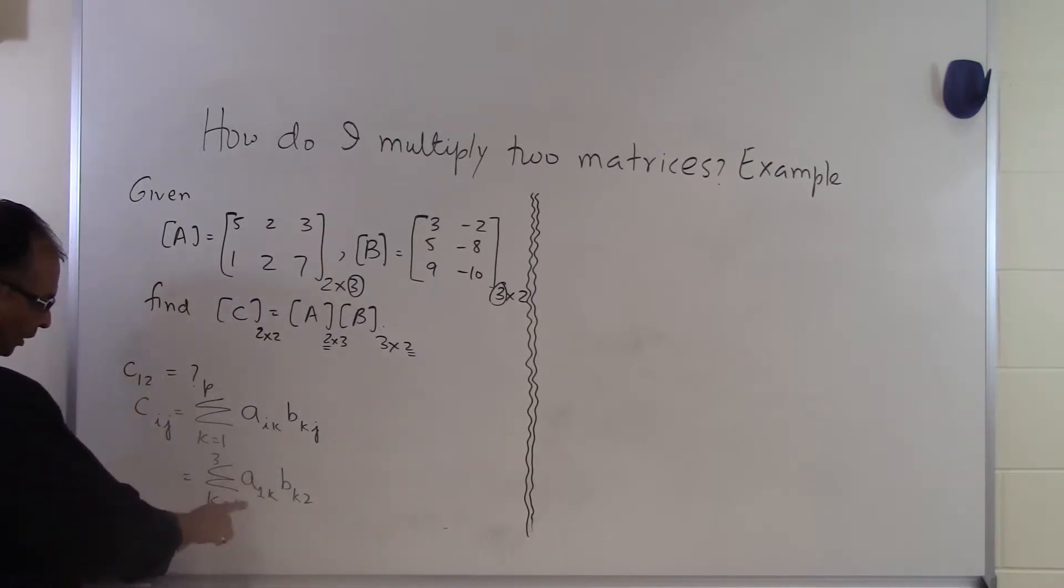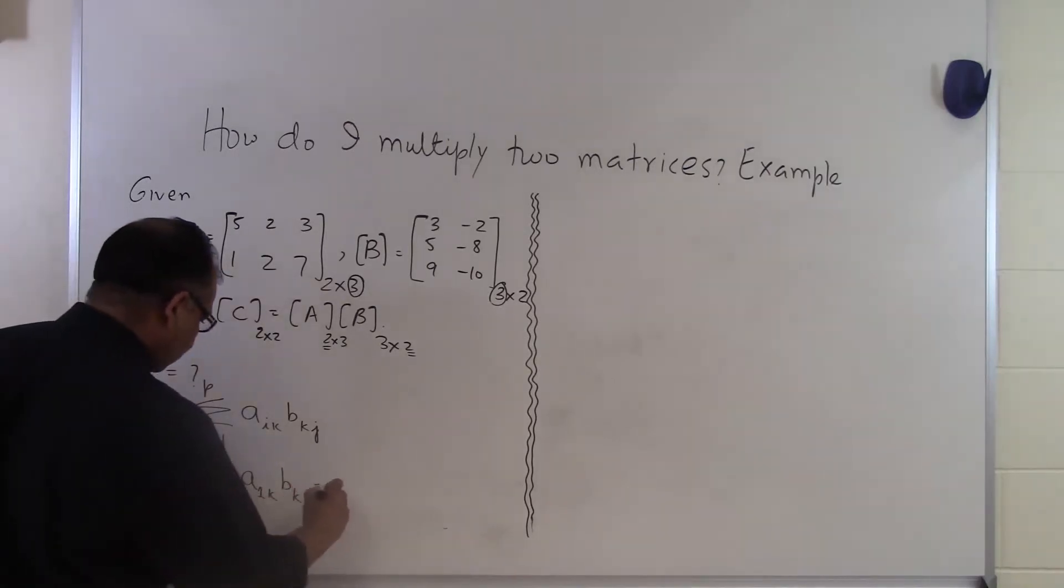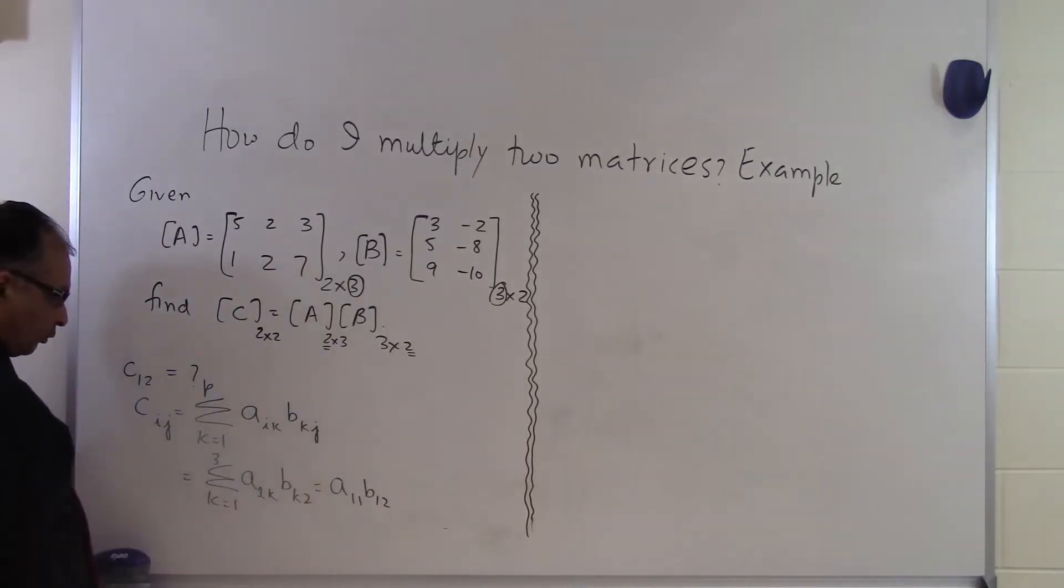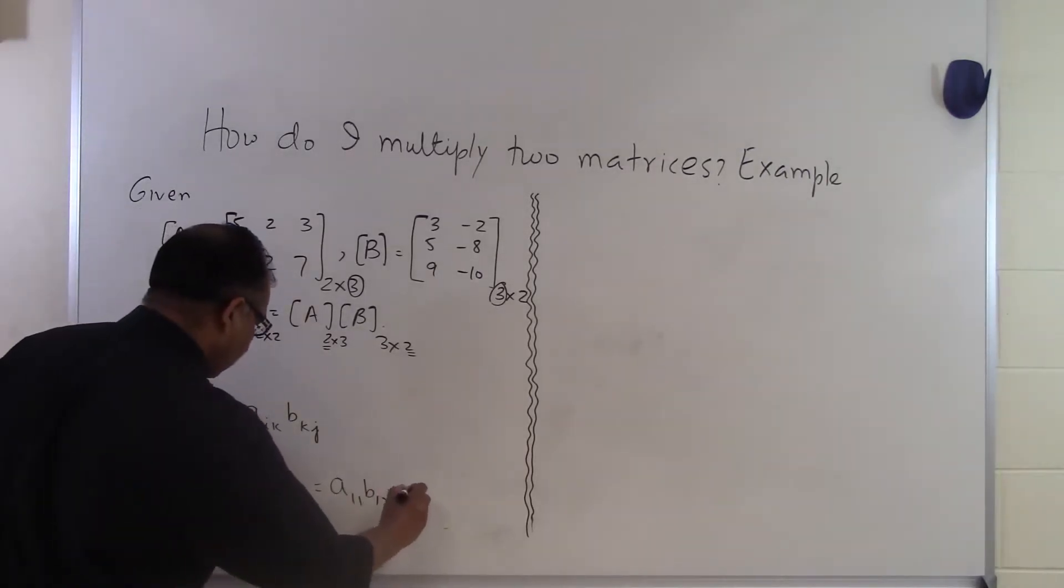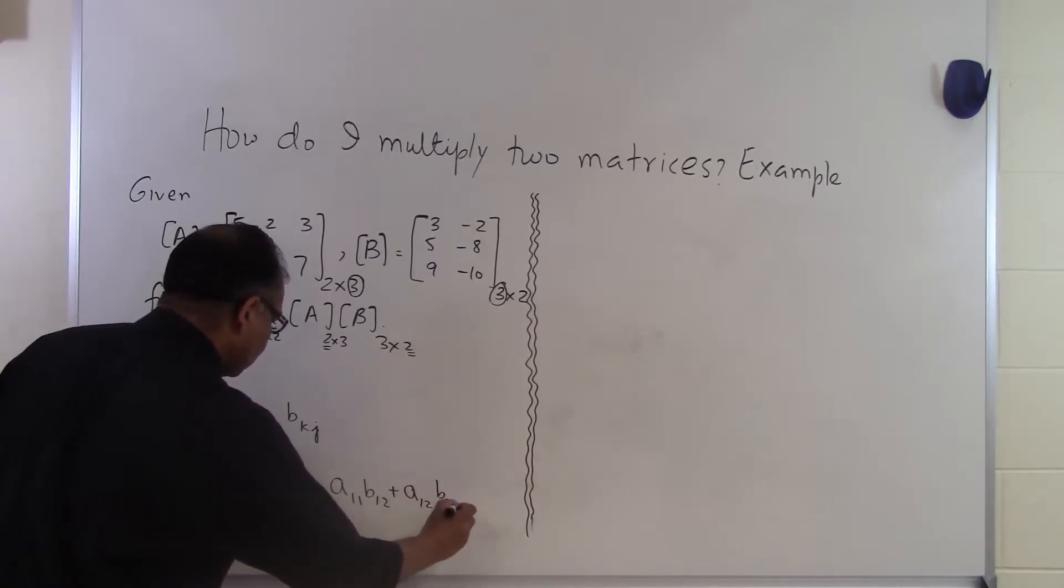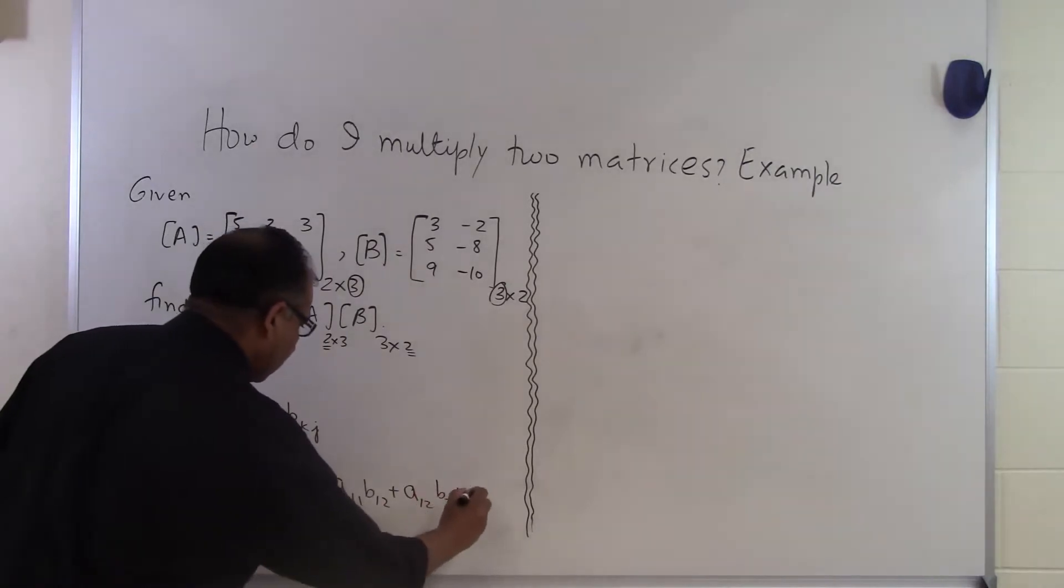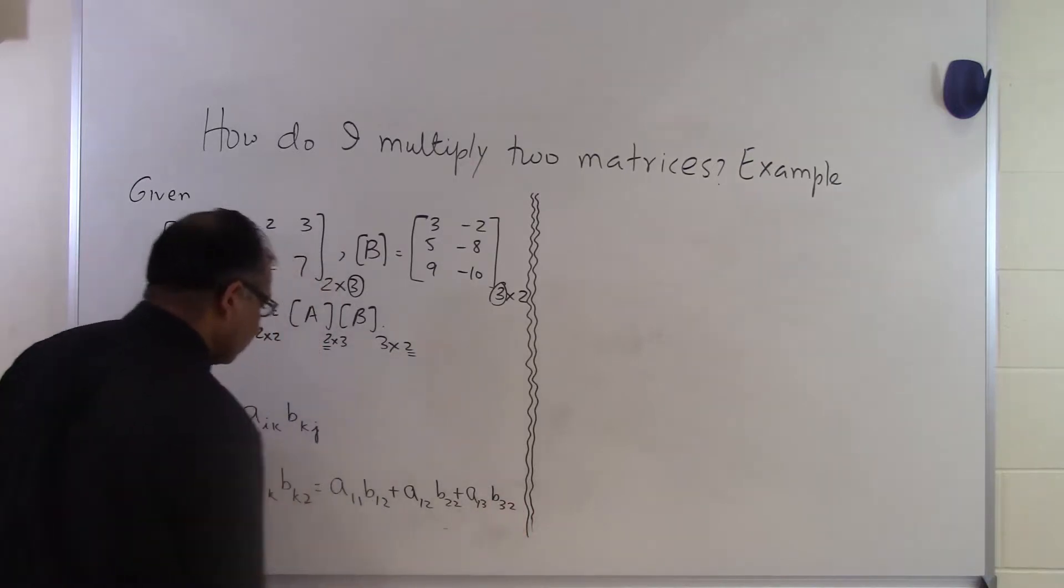So now we have the summation now. The only thing which we have here is K. So let's find the summation which we get as A₁₁B₁₂, because I am putting K equal to 1. Then I will have A₁₂B₂₂, because I am putting K equal to 2 now. Plus A₁₃B₃₂.